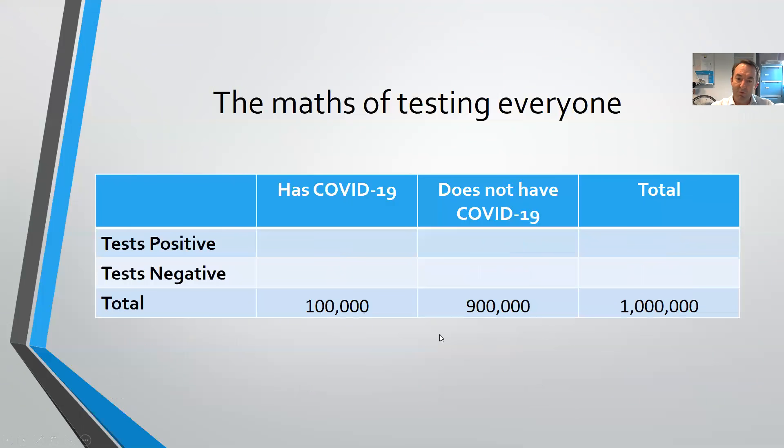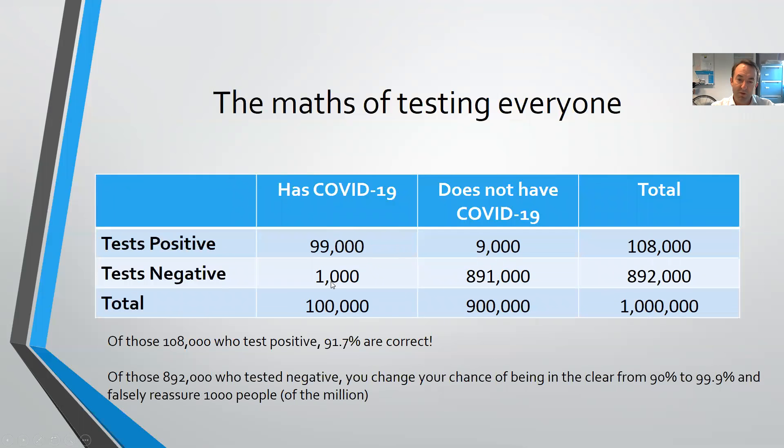If we change the figures a bit, same population million, but this time it's a lot worse. You've got 100,000 people or 10% of the population have it, and 90% do not have it. With the same figures of 99% test positive, 1% false negatives, and of the people who don't have it, 99% accurately detect as negative, but you've got this 1% false positive rate. In this situation, you've got for your total number of tests 108,000, but majority of them, so 91.7% are correct. It really looks like when you do these tests, it depends on the population. If you're testing people where it's more likely, either you've got a place that's much worse affected, or you're just testing people who are likely to have symptoms or very likely to have been exposed, it makes the test appear much more accurate.